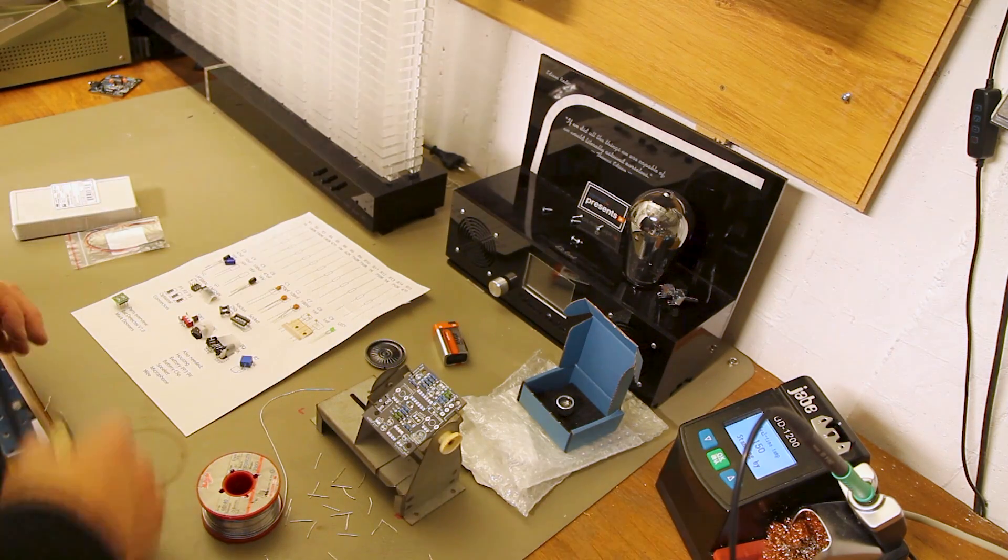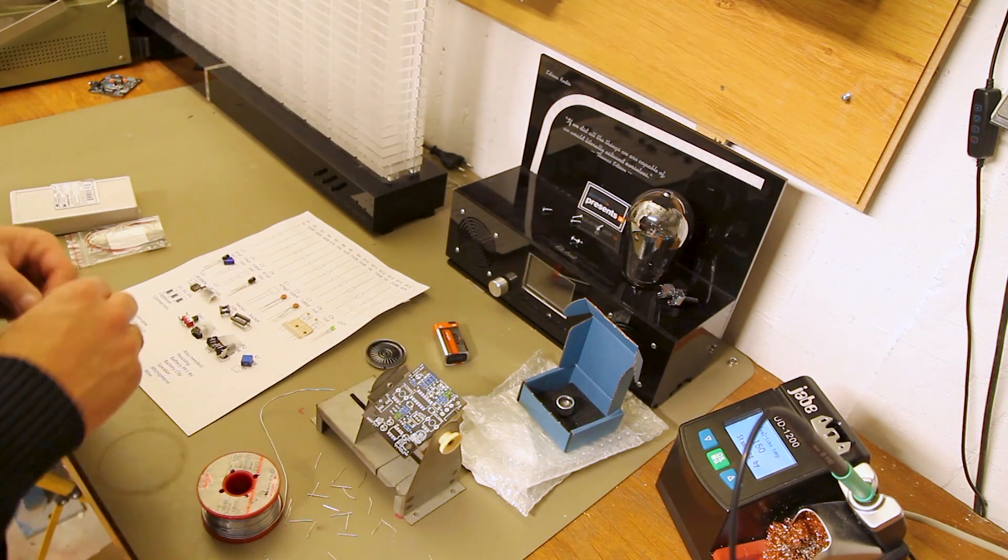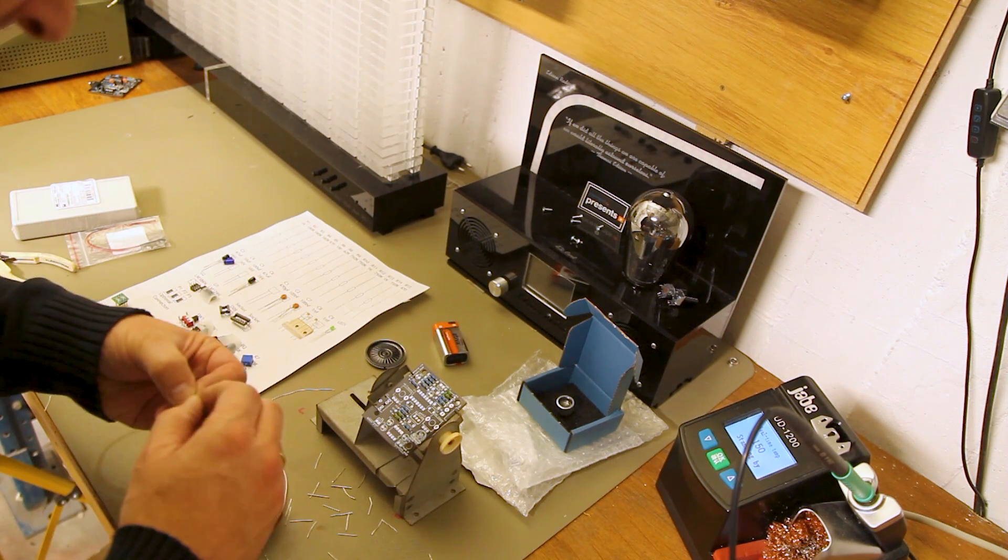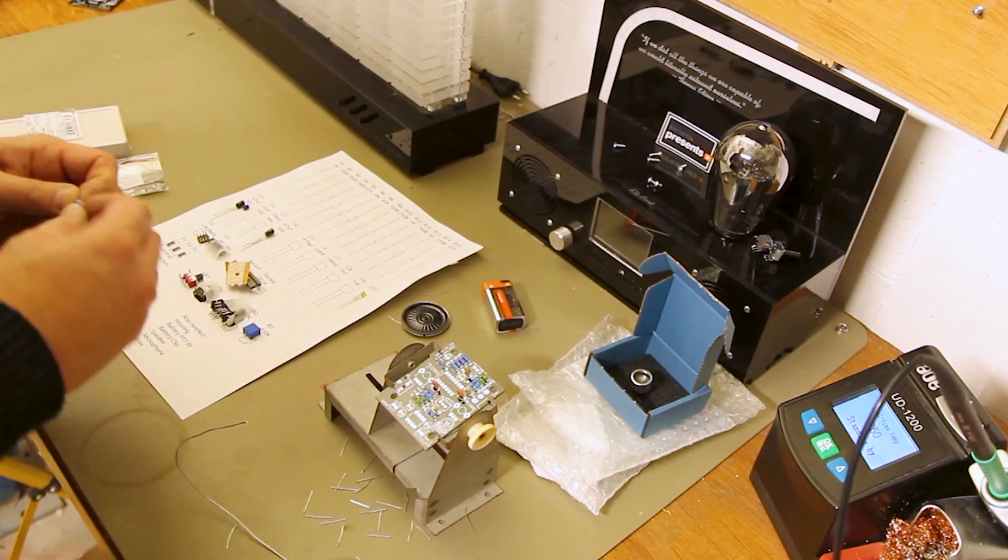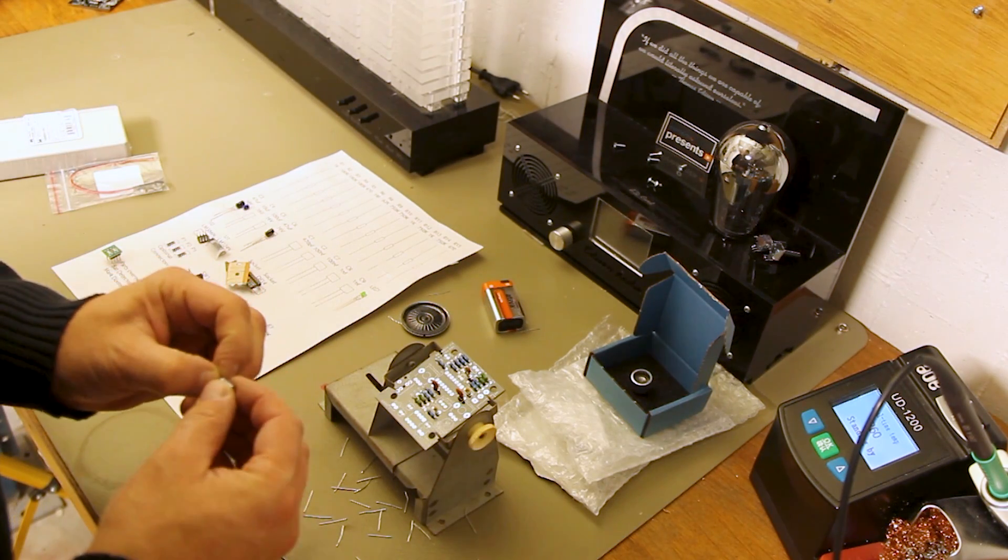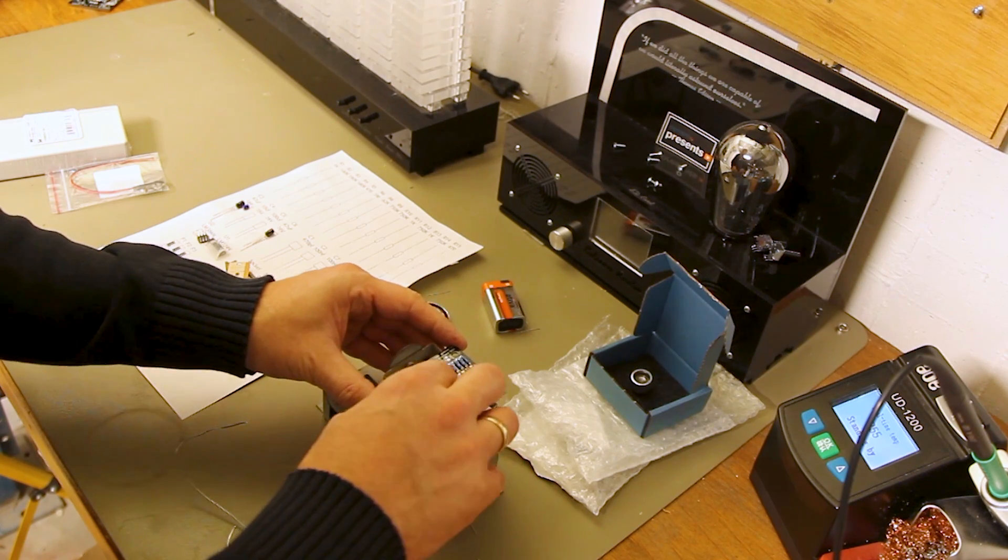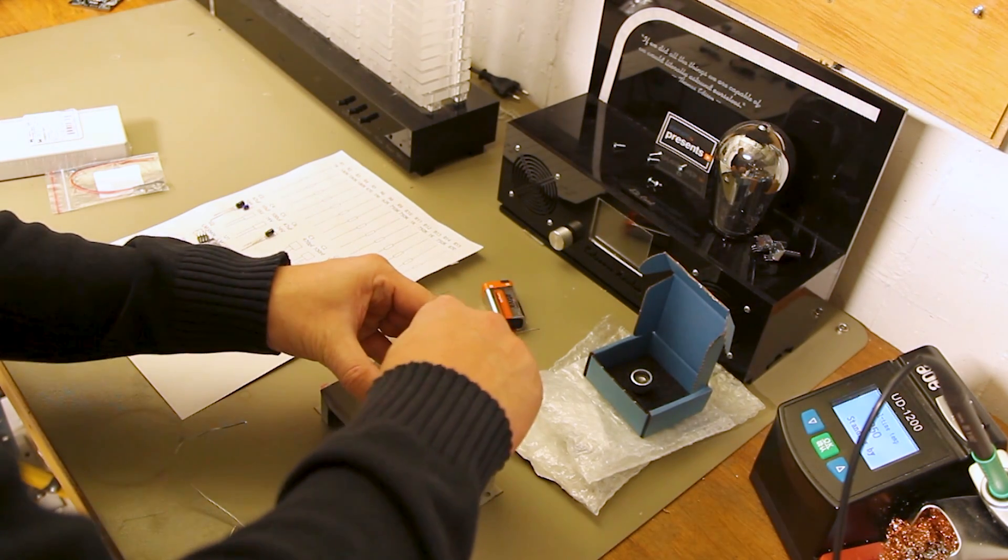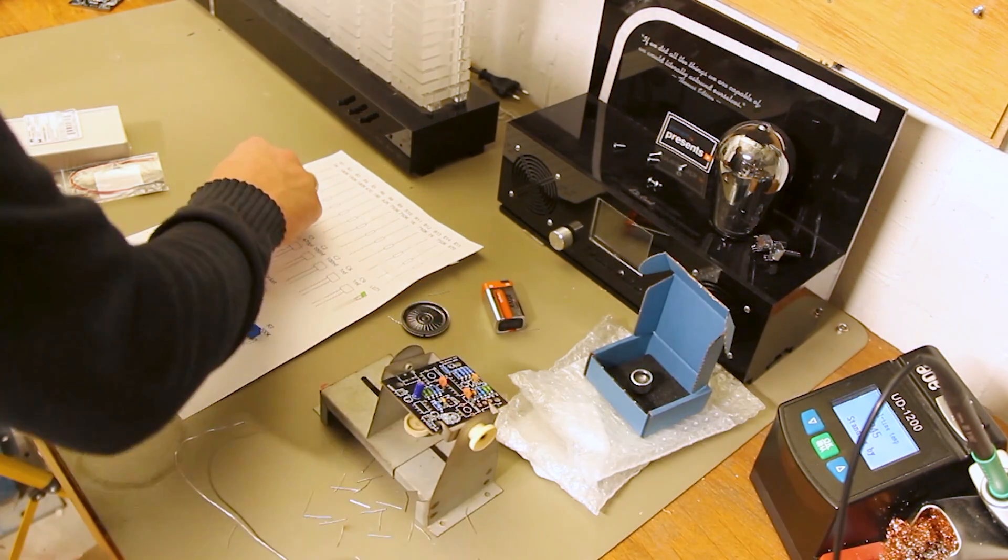Now we can start adding some more components. So next we're going to do the capacitors and we'll start with C1. This is C5. Make sure you got the polarity right. Otherwise it will only work for a very short time I'm sure.